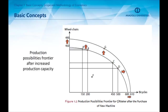An increase in a firm's production capacity can be shown in this graphic. An increasing capacity shifts the production possibilities frontier to the right and up, meaning a higher production capacity for at least one of the goods. This illustration shows a capacity increase in both of the goods that the firm produces.